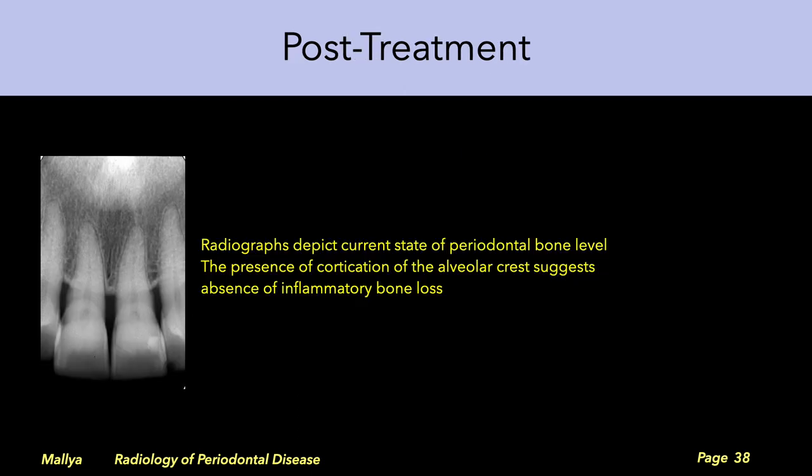As previously stated, radiographs depict both the current state of periodontal bone as well as the past inflammatory history. This radiograph demonstrates the periodontal bone in a patient with periodontitis that was successfully treated. Note how the alveolar crest is corticated, suggesting absence of current inflammatory bone loss.